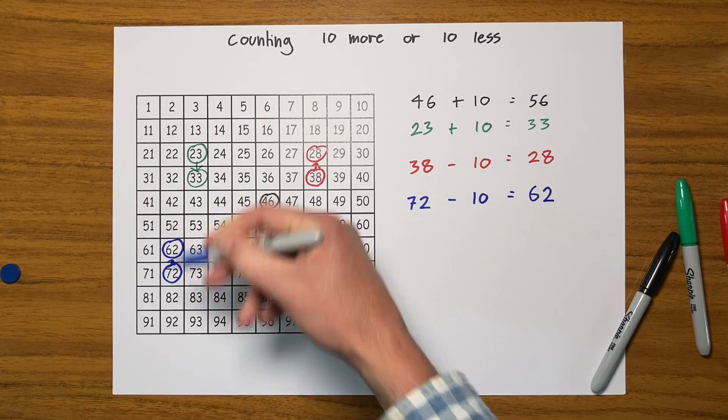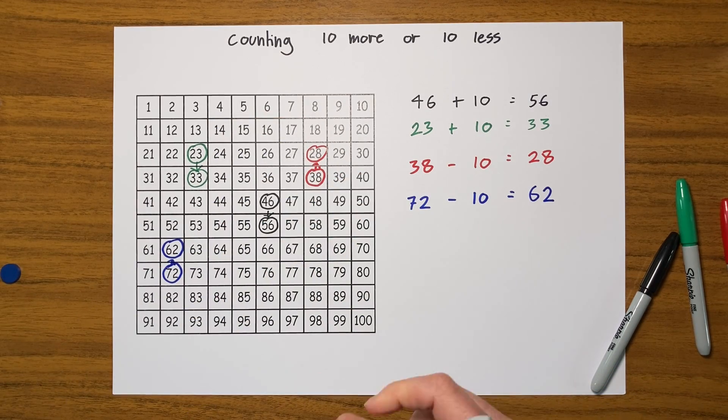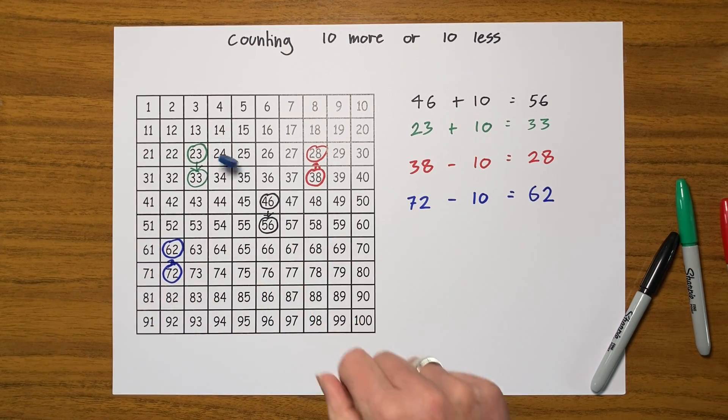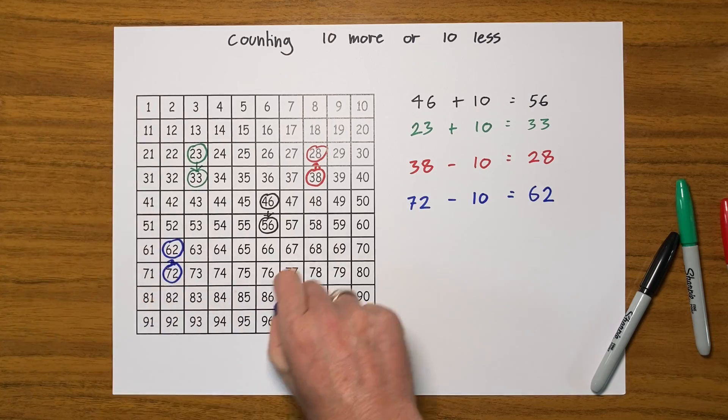So the hundred square is really useful for doing 10 more or 10 less, and I could start on any number and count up in tens. So let's again throw my coin - oh it hasn't gone anywhere where I wanted it to.